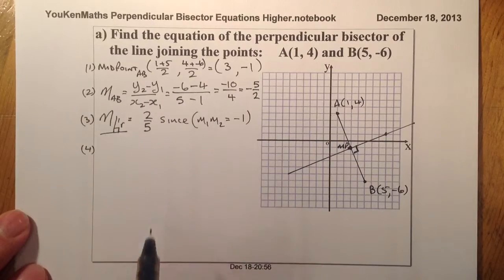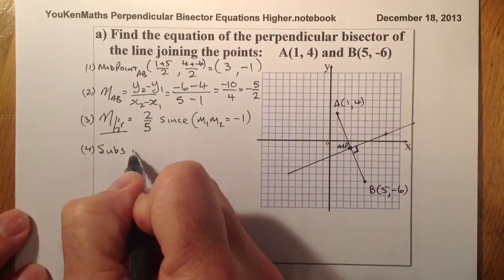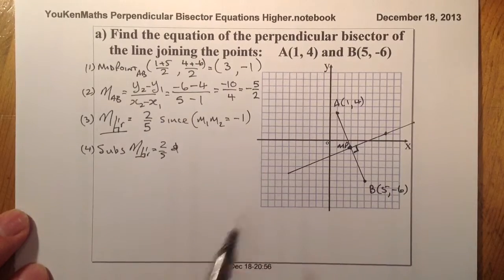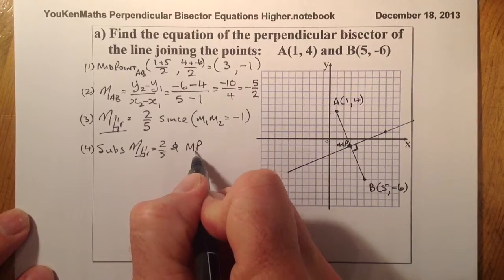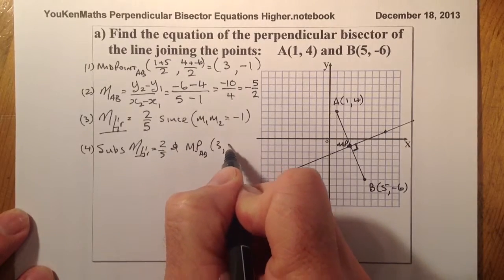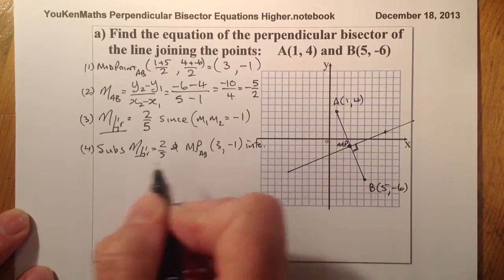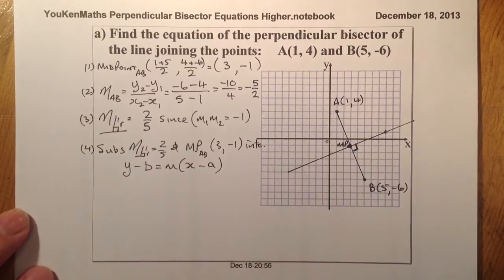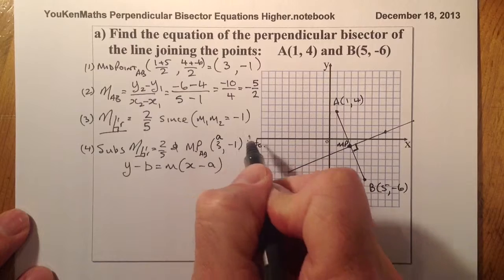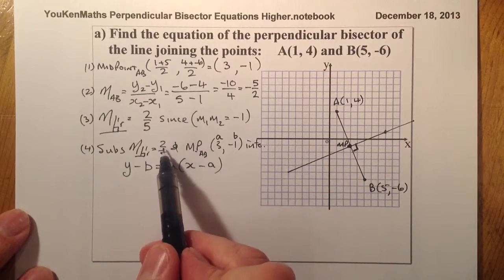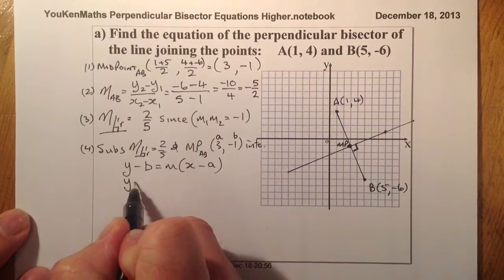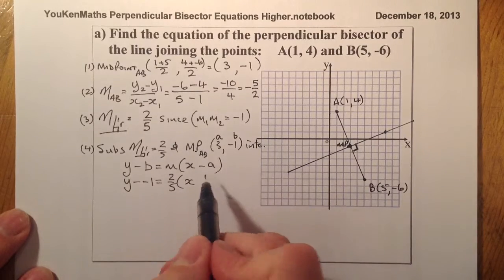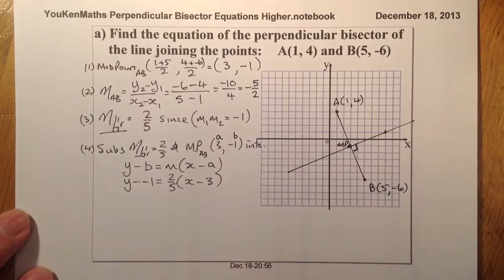For the last part, I'll substitute the perpendicular gradient — which is 2 over 5 — and the midpoint of AB, which is (3, -1), into the equation of a straight line: y minus b equals m times x minus a. So that's y minus (minus 1) equals 2 over 5 times (x minus 3).